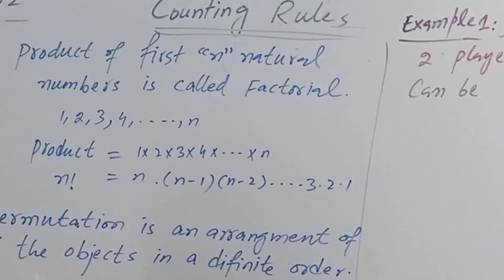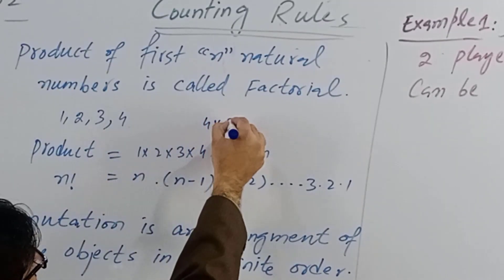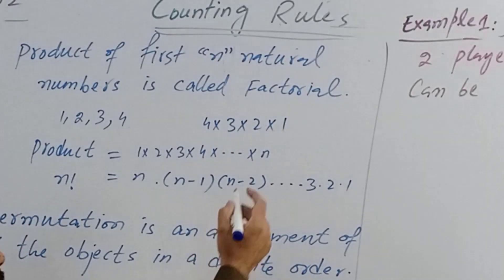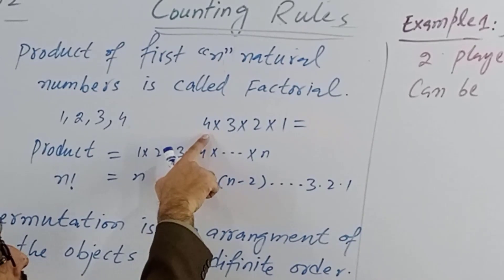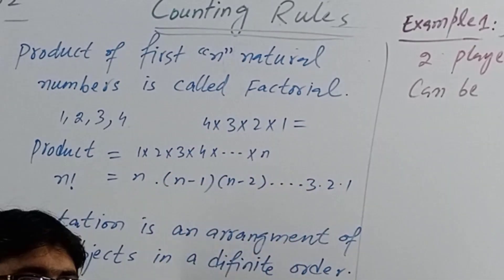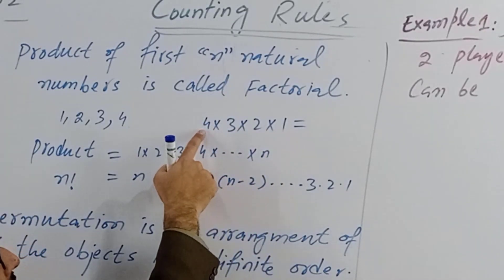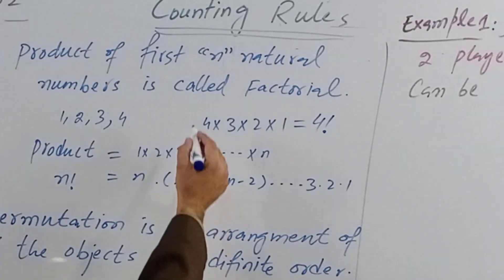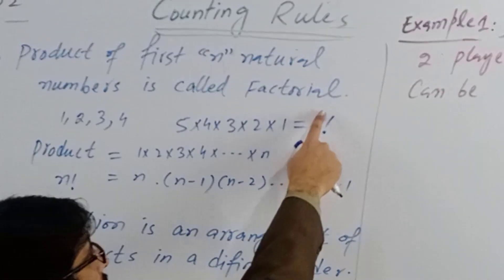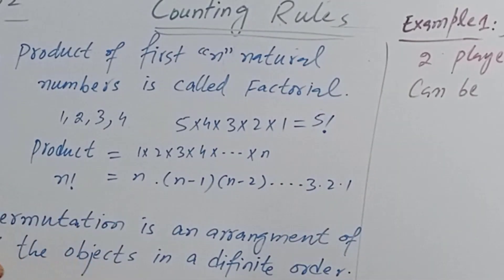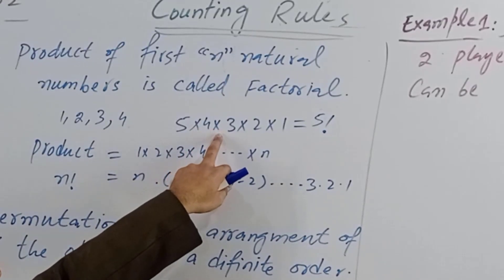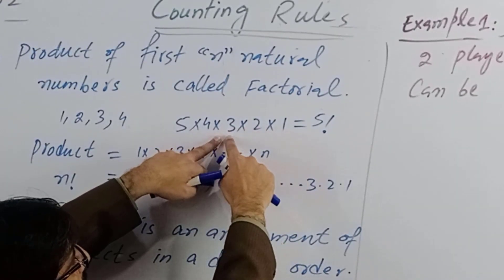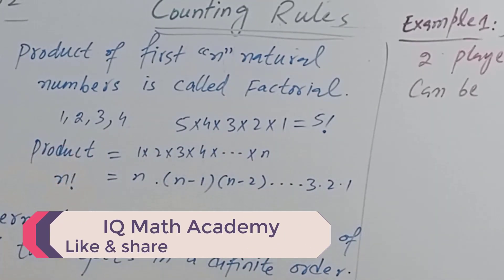For example, if I take the first four natural numbers, their product is four multiply three multiply two multiply one, which equals four factorial. If I multiply further by five, it becomes five factorial. We can also write five factorial as five multiply four multiply three factorial. That is what factorial means. Now let us move to the product rule.